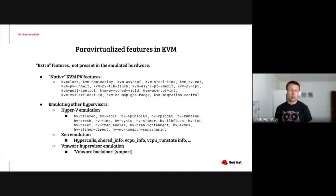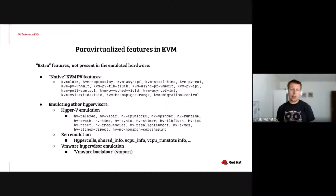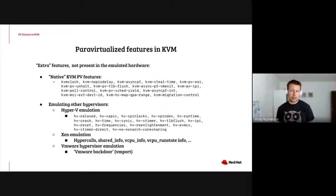Paravirtualized features — what are these features? These are features which are not present in the hardware we're trying to emulate. KVM implements quite a few. First, there are so-called native KVM PV features, which were developed specifically for KVM. Other than that, there are features from other hypervisors which KVM tries to emulate — for example, Hyper-V enlightenments. There are also features from Xen and VMware hypervisors. For the purpose of this talk, I'll be mostly focusing on native KVM PV features and Hyper-V enlightenments.